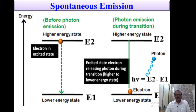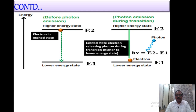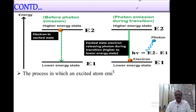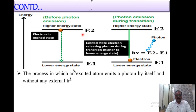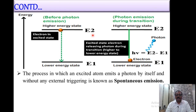To understand what is meant by spontaneous emission, consider a figure with two energy levels: E1, the lower energy state, and E2, the higher energy state, called the excited state. In spontaneous emission, electrons in the higher energy state E2 transition down to the lower energy level E1.